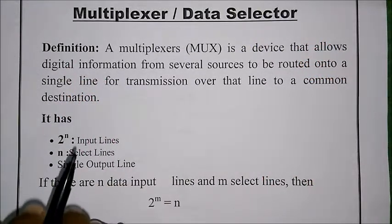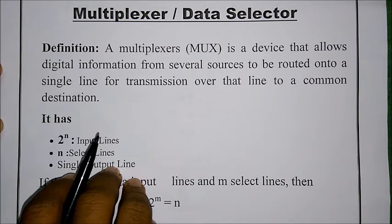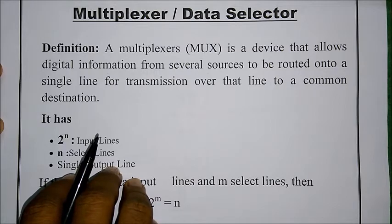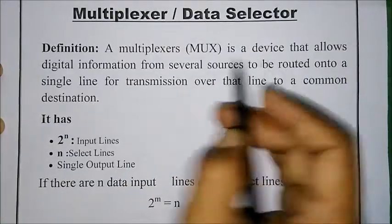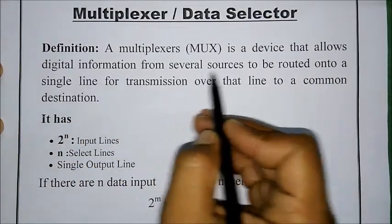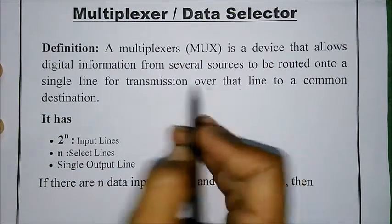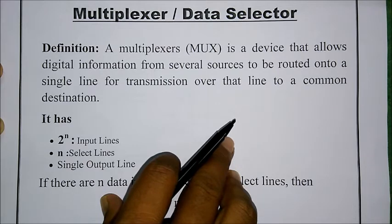Hi everyone, today we will discuss about the multiplexer or the data selector. A multiplexer is a combinational circuit which will be multiplexing all the data and it will be allowing the data to be sent on a single line. A multiplexer is a device that allows the digital information from several sources to be routed onto a single line for transmission over that line to a common destination.